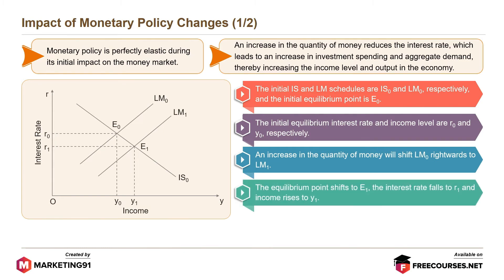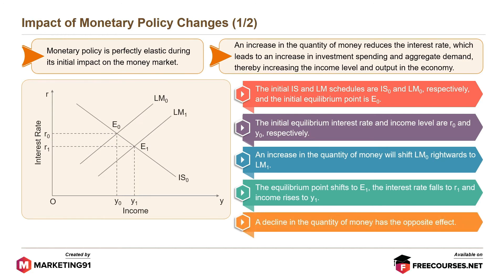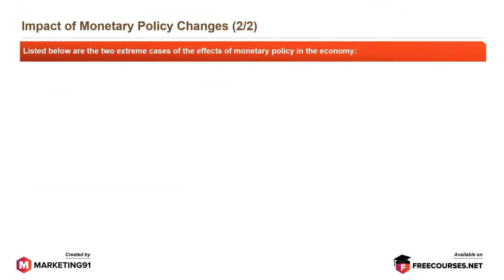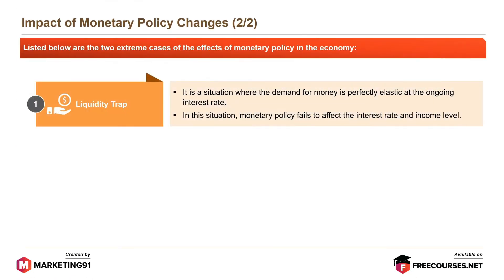The equilibrium point shifts to E1, the interest rate falls to R1, and income rises to Y1. A decline in the quantity of money has the opposite effect. Two extreme cases on the effects of monetary policy are: the liquidity trap, a situation where the demand for money is perfectly elastic at the ongoing interest rate, in which monetary policy fails to affect the interest rate and income level.